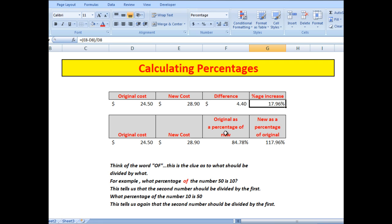We'll see down here that think of the word 'of' as the clue to what should be divided by what. For example, what percentage of the number 50 is 10? This tells us that the second number should be divided by the first. So if you break the arithmetic down into that type of thinking, then the calculation of percentages becomes rather easier.